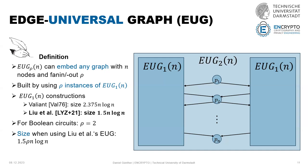We can reduce the problem of finding an edge-universal graph for row fan-in fan-out to finding edge-universal graphs for fan-in fan-out one graphs. We have constructions for edge-universal graphs with different sizes: the first constructions have size 2.3–5 n log n, and the most efficient construction to date has 1.5 n log n. When we use this construction for general row-input circuits, we have a total size of 1.5 n log n.